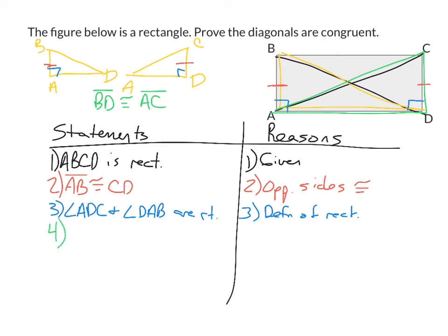And because we have two things being right angles, we know that angle ADC is congruent to angle DAB. Because all right angles are congruent.